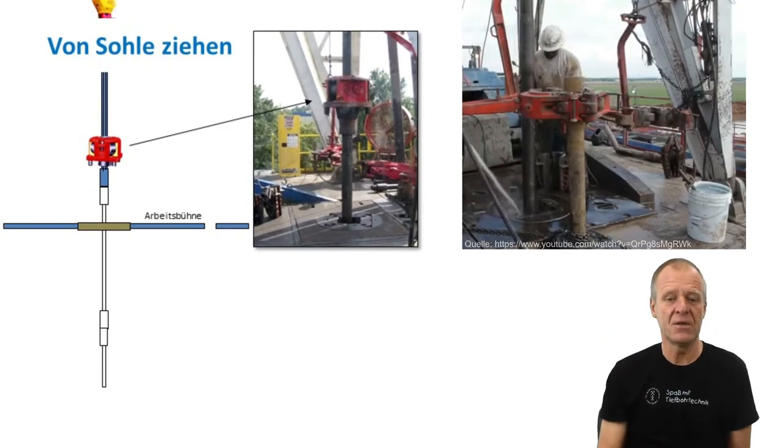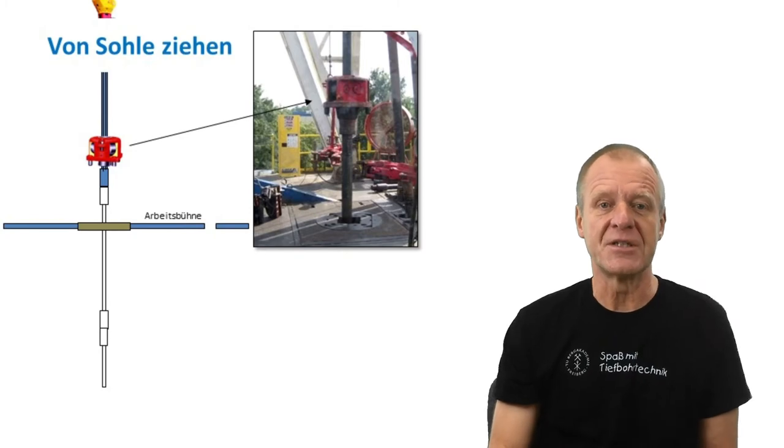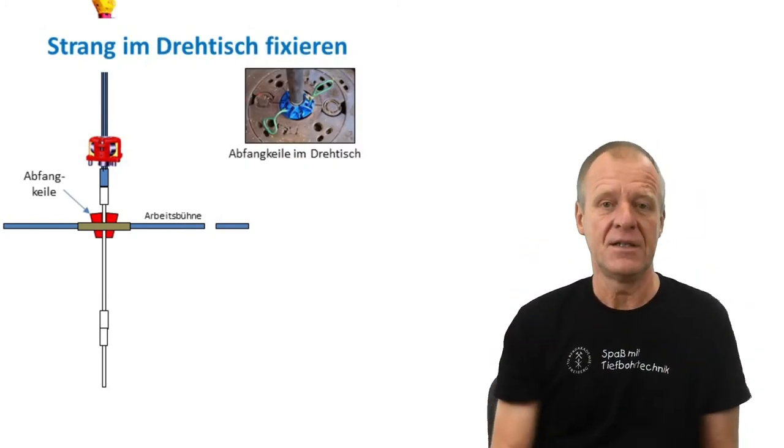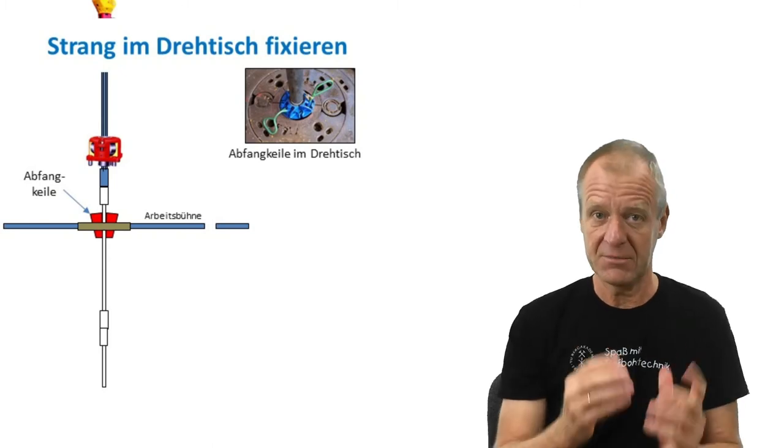Now we secure the drill string in the rotary table by setting the slips. These slips ensure the drill string cannot fall into the borehole when we unscrew the connection to the Kelly rod.